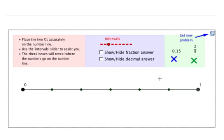Let's do this one. So we have two numbers, 0.15 and 2/9. And really off the top of my head, it's kind of hard to know which one's bigger. So let's place them on the number line to find out. So 0.15, let's place that one first.